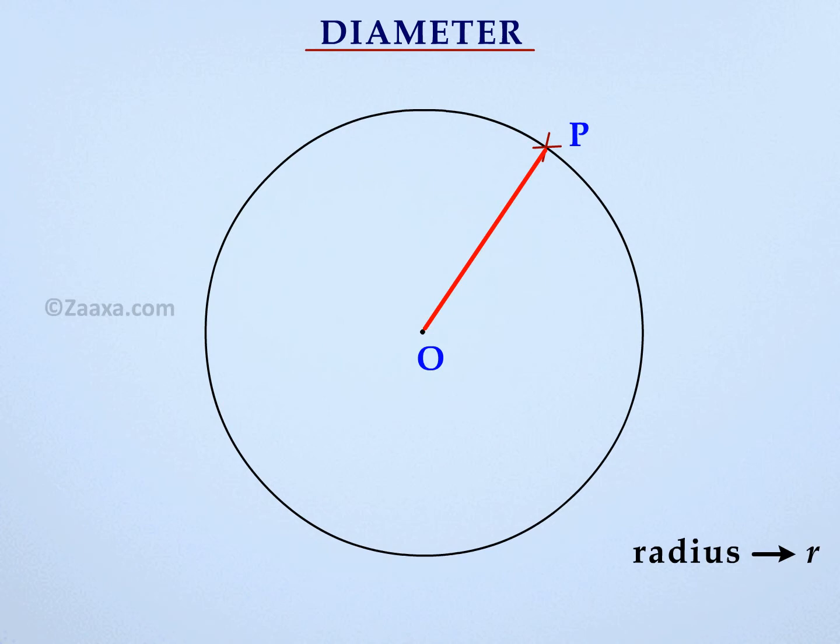Let us now extend PO to cut the circle at another point, Q. We say that PQ is a diameter of the circle.